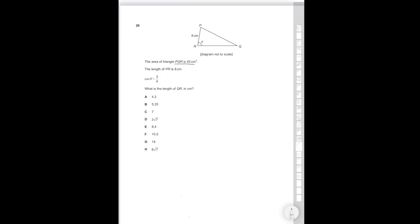So question 20, this is a bit more of a difficult question, but I'm going to show you the step-by-step method to doing it. The area of triangle PQR is 42 centimeters squared. The length of PR is 8 centimeters. Cos theta is 3 over 4. What is the length of QR in centimeters? Let's call QR X. So let's start off by saying that half AB sine theta is equal to area. So that's the formula you know from GCSE. So area of a triangle formula. So if we apply that to this triangle, half times 8 times X sine theta is equal to 42. So 4X sine theta is equal to 42. X sine theta is equal to 42 divided by 4, which is equal to 21 over 2.